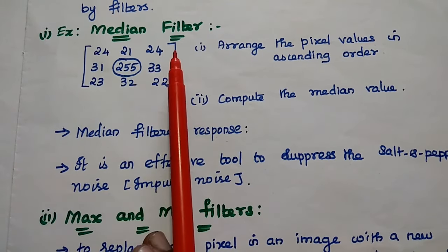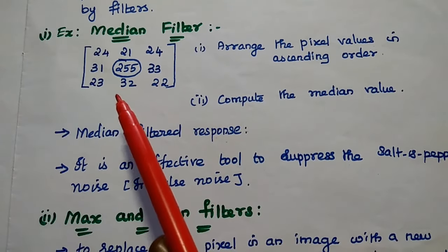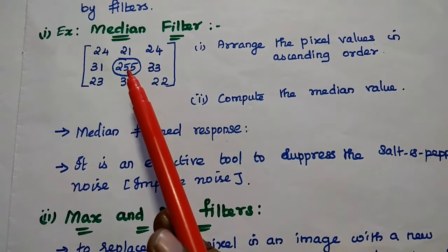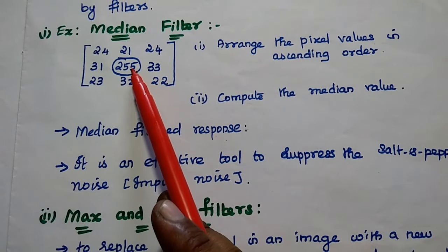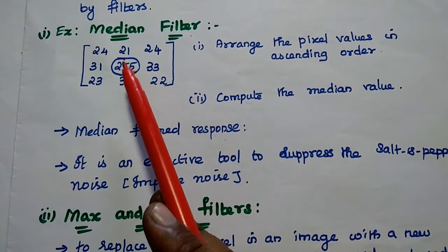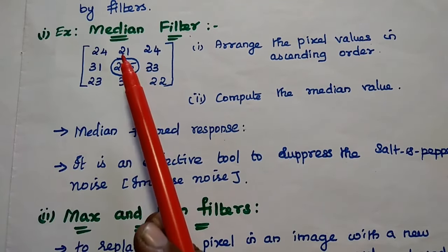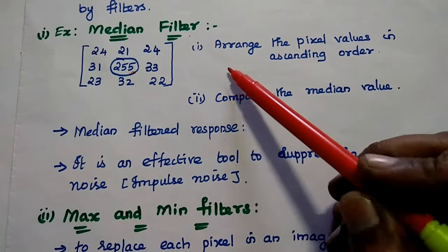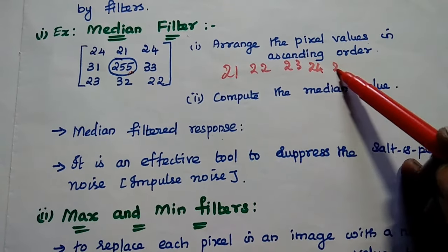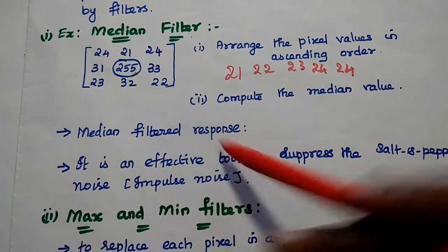Let's discuss them one by one. For the median filter, we take an image segment as an array. We are going to replace the given pixel value using the median filter. The median value of the segment is found by arranging the pixel values in ascending order. Starting from 21, we write: 21, 22, 23, then 24 two times — if it appears two times, we repeat it.